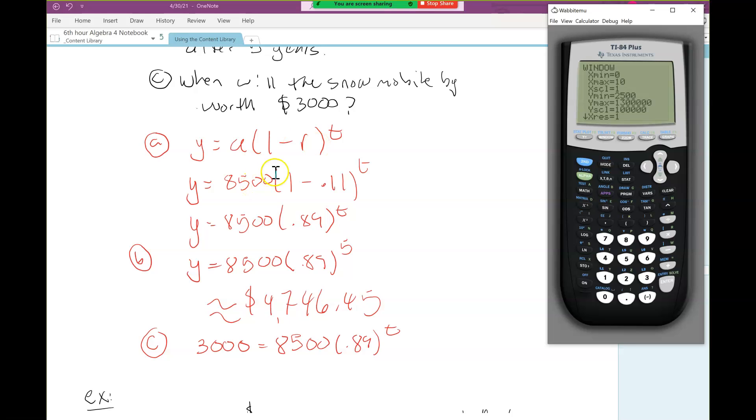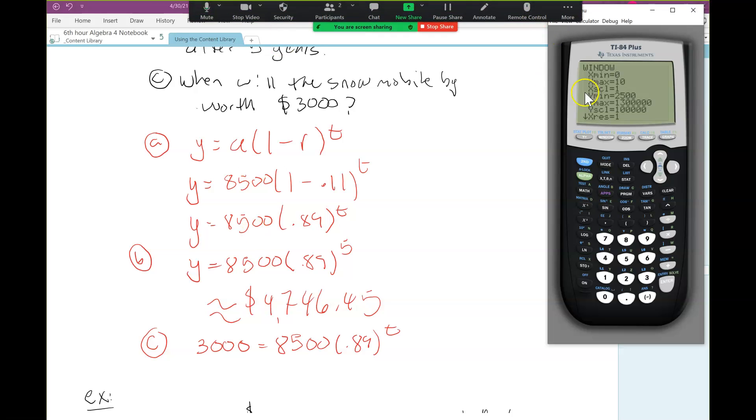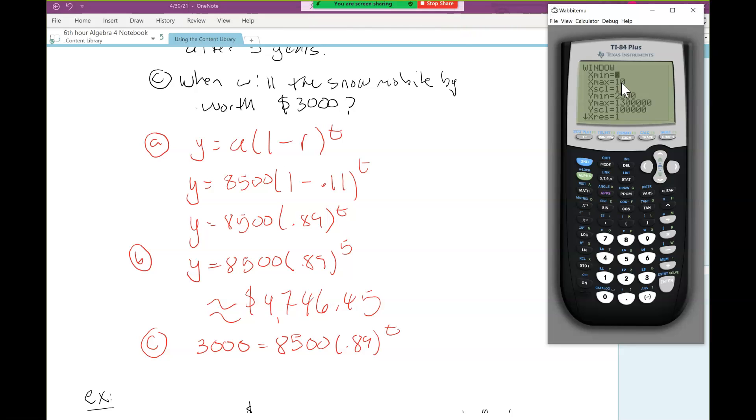Now we need to set our window. Here we don't really know what t has to be because we're not told the model is good for 10 years. We're going to have to take a guess. We started at 8,500. After 5 years it went down to almost half. To get to 3,000, I think within another 5 years it would probably go down to 3,000. So I think 0 to 10 is probably fine. If we don't see an intersection, we can always bump that out.